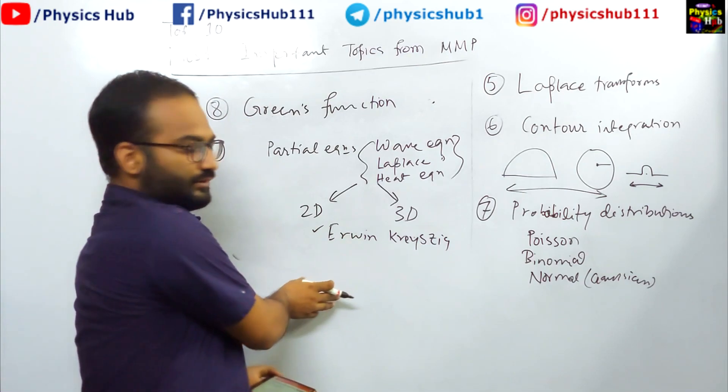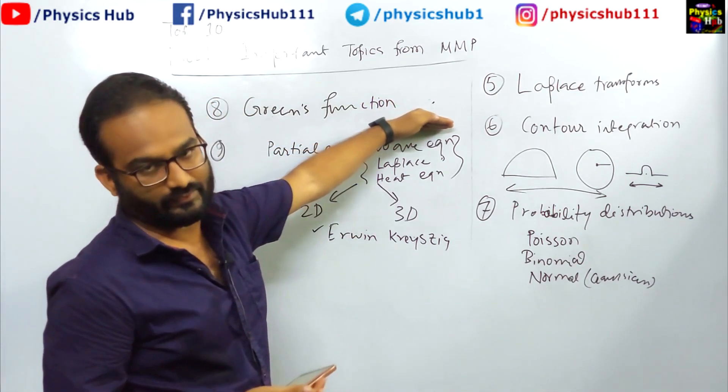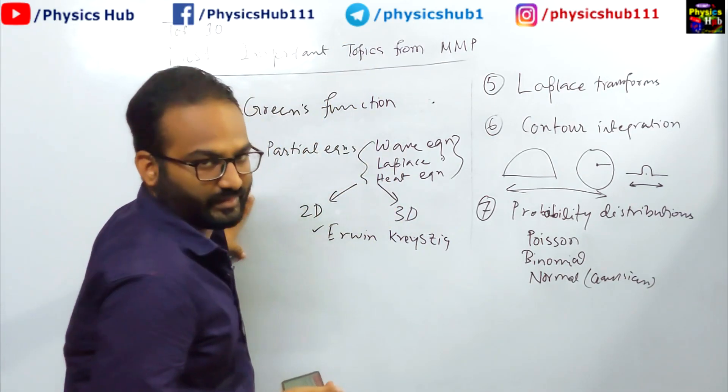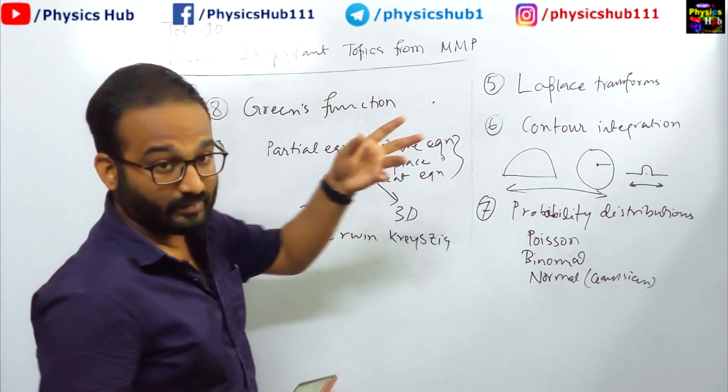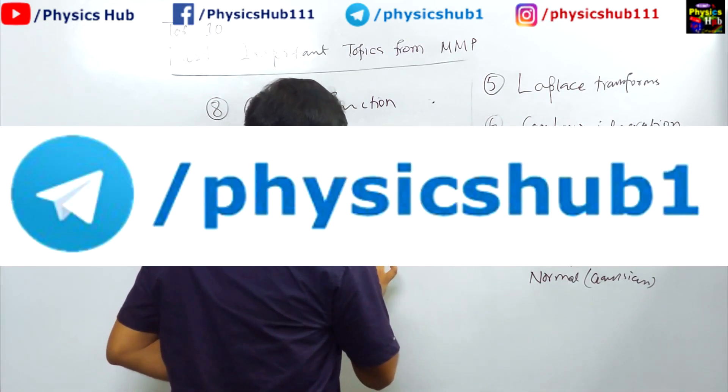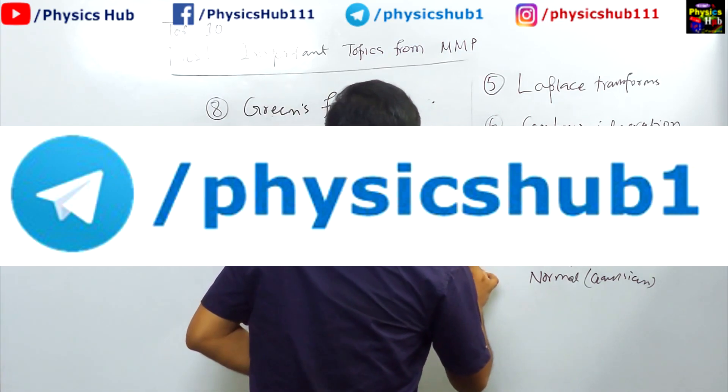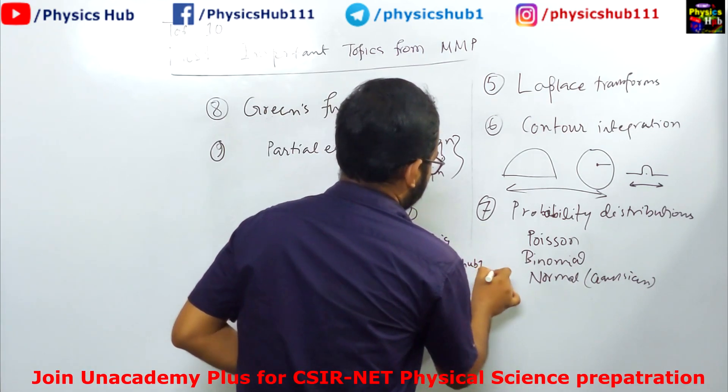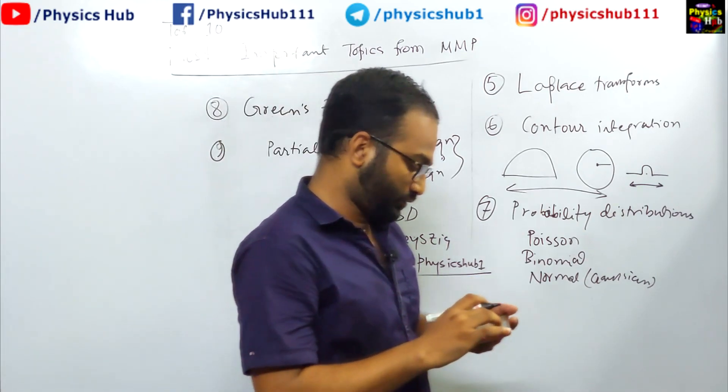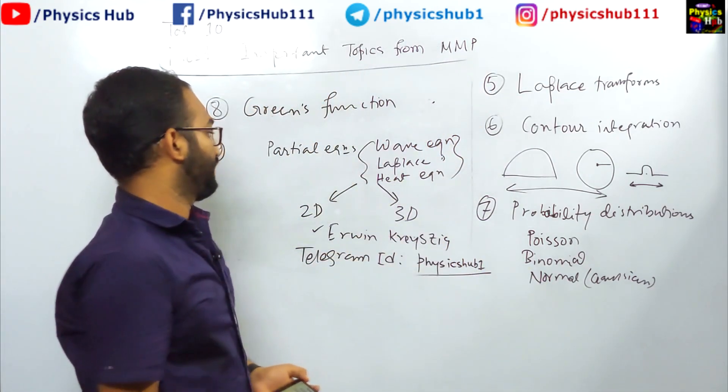You can refer to this book to learn this and I will try to maybe provide you the element theory I had written in brief for these equations. If possible, I will try to find it and share it on the telegram group. Let me give you our telegram ID. You can just join by searching this ID - physicshub1. And a similar standard problem based on this, like what kind of problem you can expect, I will attach somewhere.